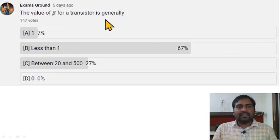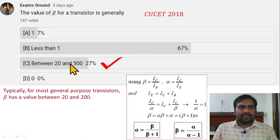The value of beta for a transistor is generally... most of us have chosen the wrong answer. B is not correct. Option C is going to be correct. Typically, for most general purpose transistors, it has values between 20 and 200, and it can also go from 20 to 500.